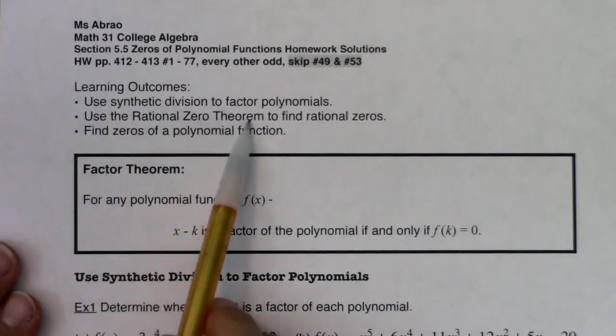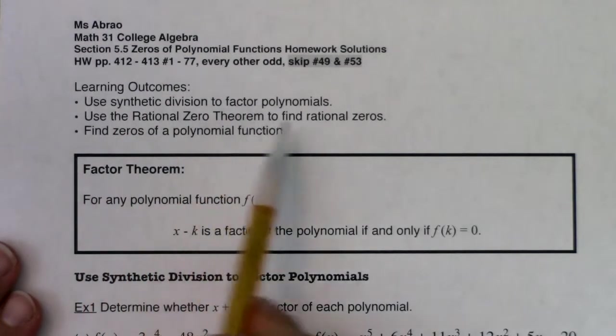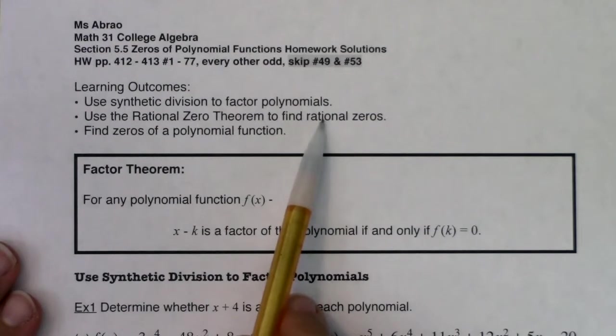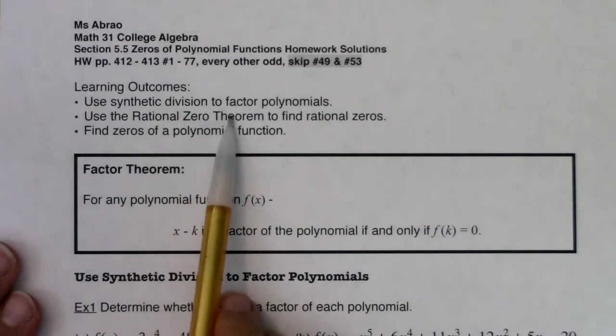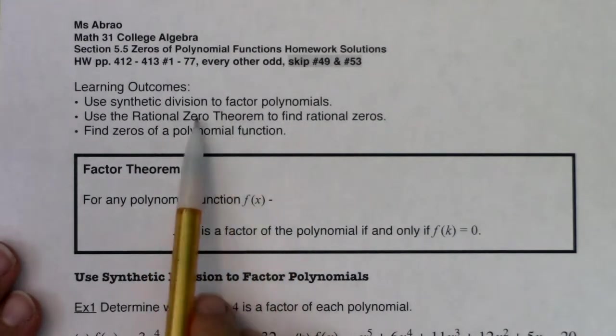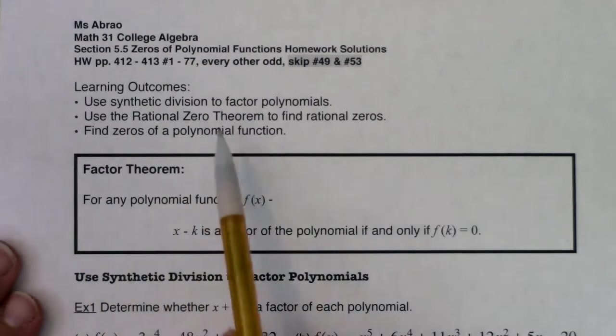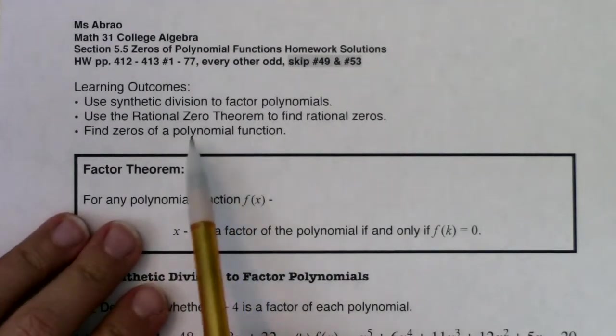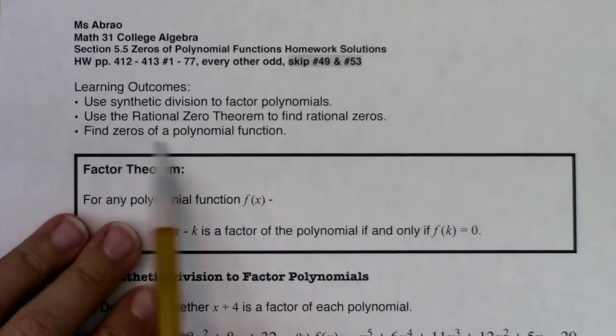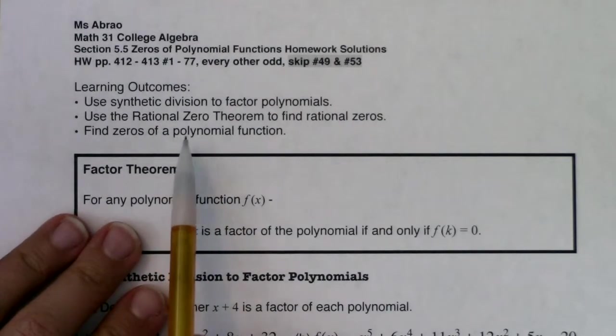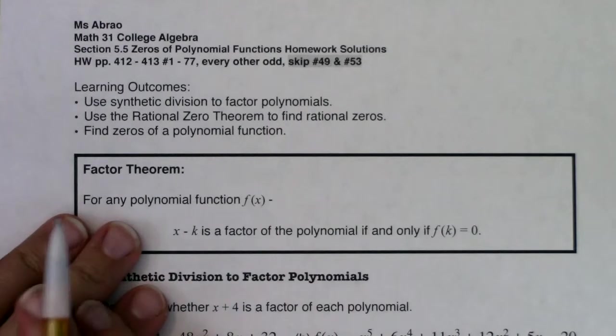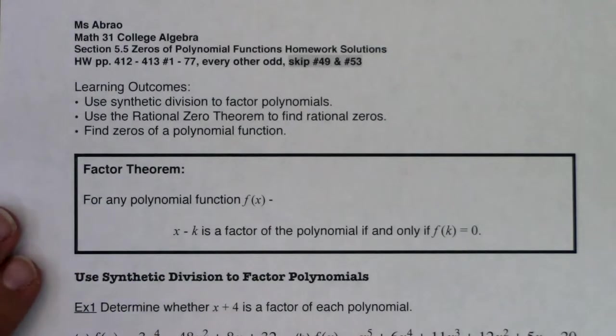We're also going to use the rational zero theorem to generate a list or to find rational zeros. So this theorem, it seems pretty intense, but it's like a starting point. We've got to start somewhere, we've got to find at least one zero, and then hopefully that unlocks the rest of them. And then we're just going to find zeros of polynomial functions. And this can take a while. The last couple of examples in this section are going to take a while. They're pretty intricate, and there's a lot involved.